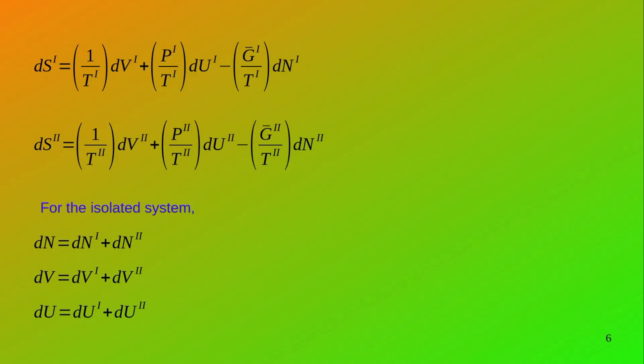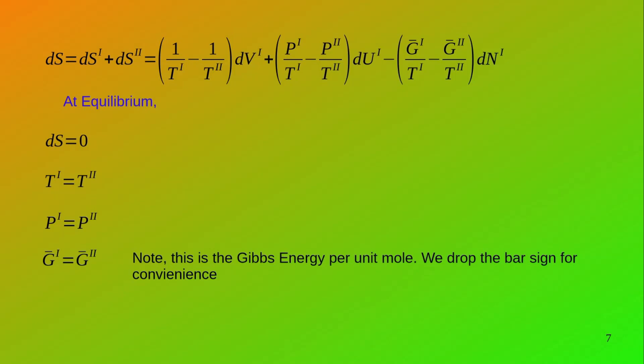Please note: dn₁ = −dn₂, dV₁ = −dV₂, and dU₁ = −dU₂, because the total dU, dV, and dn are each zero for the isolated system. Now at equilibrium, it is a well-known fundamental that the change in entropy of an isolated system is zero. Applying this, we get: T₁ = T₂, P₁ = P₂, and the Gibbs free energy per unit mole for subsystem 1 equals the Gibbs free energy per unit mole for subsystem 2.